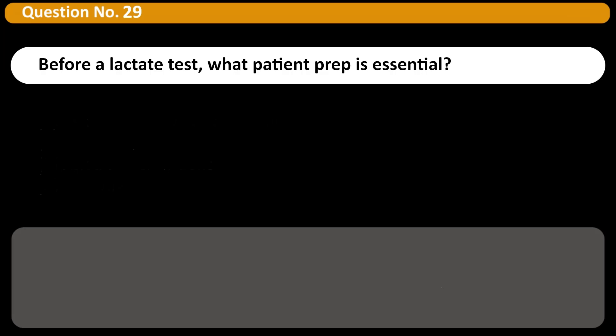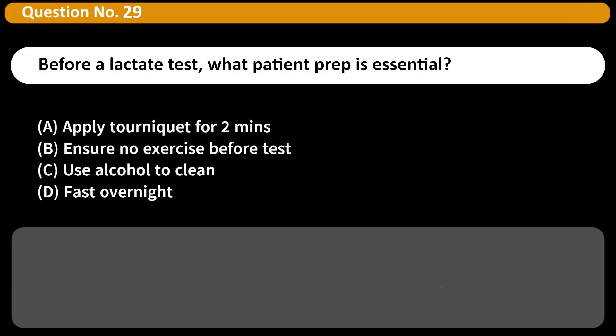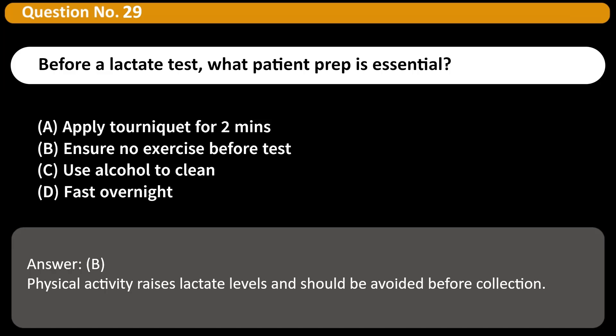Before a lactate test, what patient prep is essential? A. Apply tourniquet for 2 minutes. B. Ensure no exercise before test. C. Use alcohol to clean. D. Fast overnight. Answer: B. Physical activity raises lactate levels and should be avoided before collection.